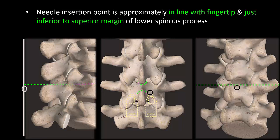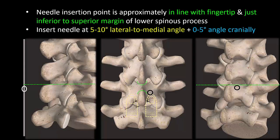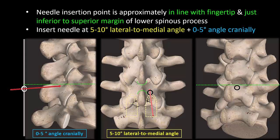The needle is inserted at a very small lateral to medial angle, no more than 5 to 10 degrees. The caudal to cranial angle should be even smaller to begin with. If the interlaminar space is large — for example in a well-flexed lumbar spine — the needle may enter the space without any cranial angulation at all. Most of the time, however, it initially strikes the lamina of the lower vertebra.